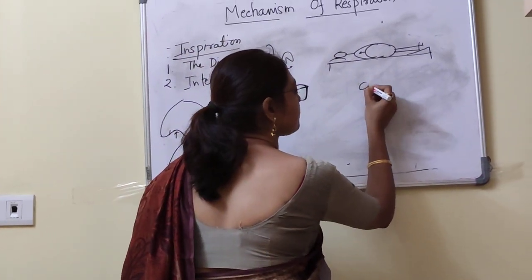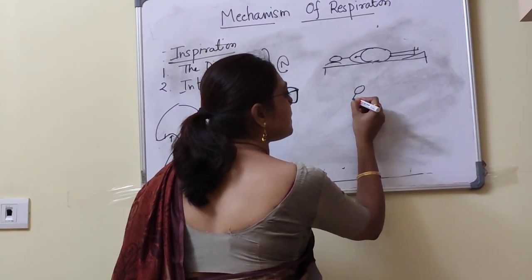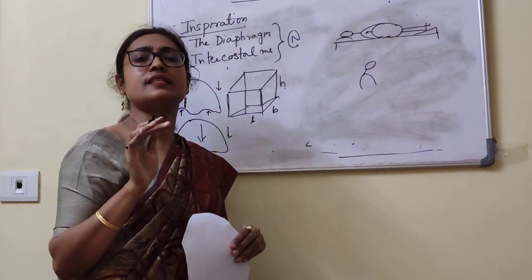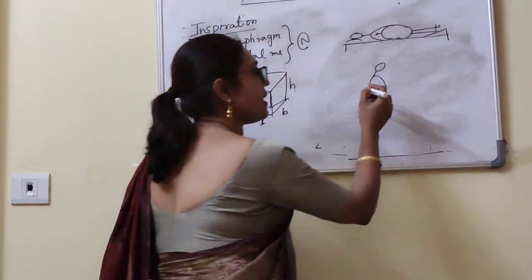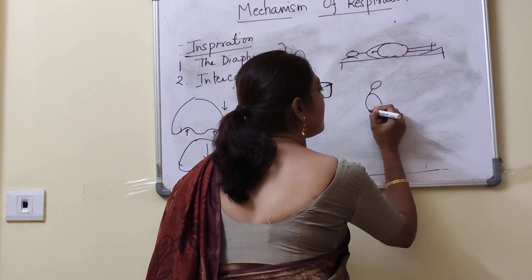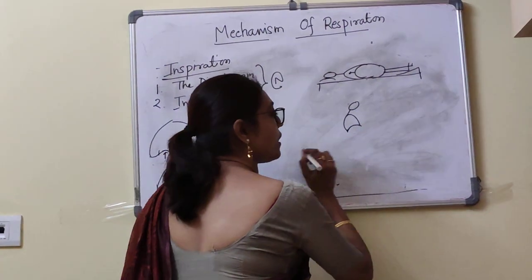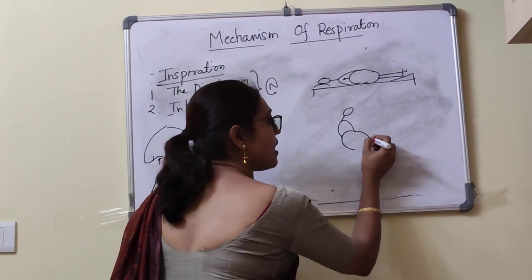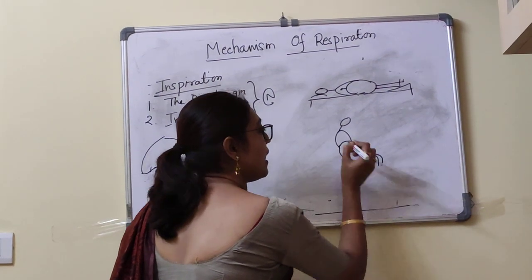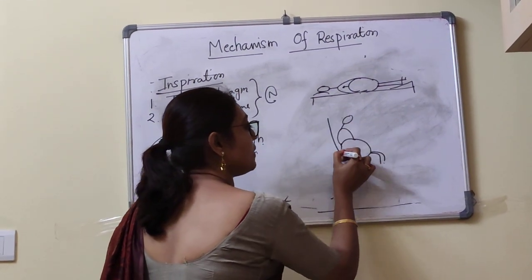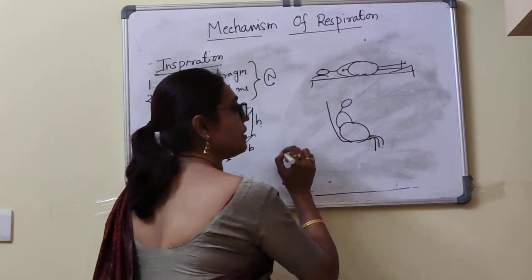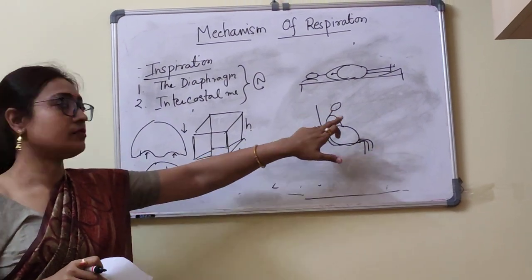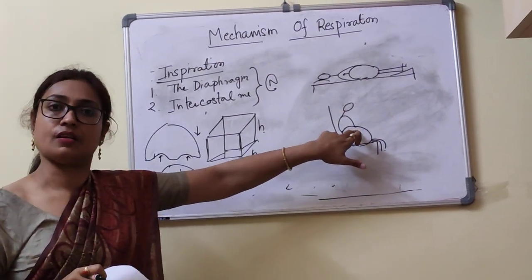Suppose a person has a lung disease on the right side. If he lies on the left side, he will get relief. When a person is lying on one side, the two domes of the diaphragm are not of equal height — the right dome will be at a much higher level and will undergo more excursion, making the right side lung do more work. So lying on the left side gives relief to the right lung.